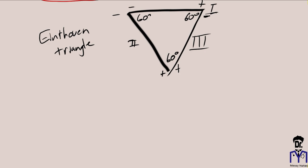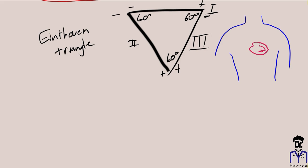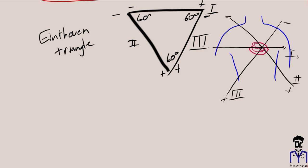To represent cardiac electrical activity, we can draw these leads so they intersect each other through a common point while keeping their original orientation. Lead III is still at 120 degrees, Lead II at 60 degrees, and Lead I at 0 degrees. This shows us that Leads II and III look at the heart inferiorly, and Lead I looks at the heart laterally.